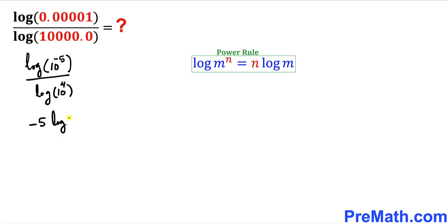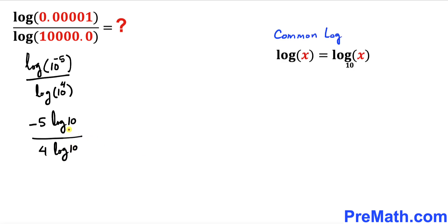Now we can see that our bases are missing over here. We don't have any base, and such kind of log is called a common log. Our base is going to be 10 by default. So therefore, our logs become log of 10 with base 10, and likewise log of 10 with the base 10 as well.